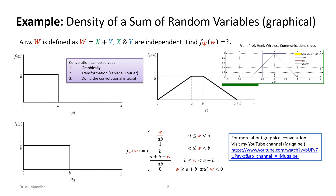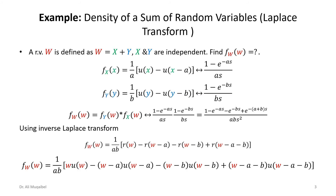The same example can be solved using the Laplace transform. The PDFs are written in terms of the unit step function, and their associated Laplace transforms are computed. Since convolution in the time domain is multiplication in the Laplace domain, we multiply the two transforms, simplify, and work backwards using ramp functions expressed with unit step functions. The result is exactly the same answer written in a different form, confirming both the graphical and transform methods agree.